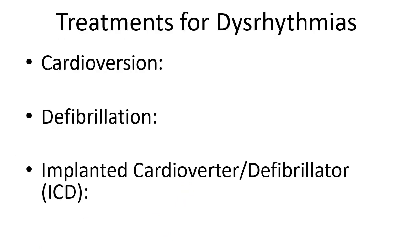Treatments for dysrhythmias include cardioversion, often used for tachyarrhythmias not responding to treatment. Cardioversion is a synchronous shock — delivered so it does not shock the patient on the T-wave. It's for patients with a discernible but very irregular, usually rapid heart rate not responding to treatment, such as patients in AFib not being converted. Contrast that with defibrillation, which is asynchronous and used for pulseless V-tach or V-fib. There is no discernible PQRST, so we don't have to worry about accidentally shocking on the T-wave.